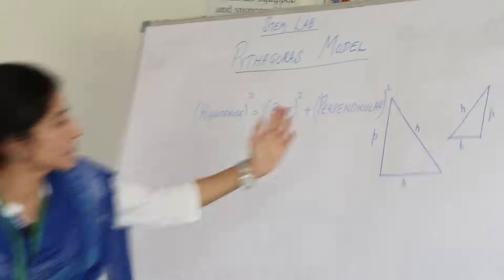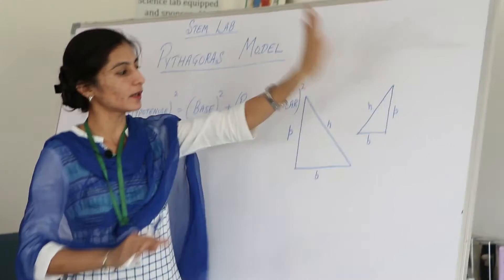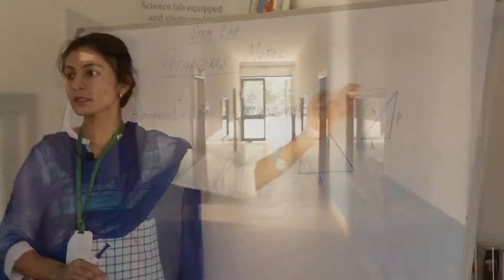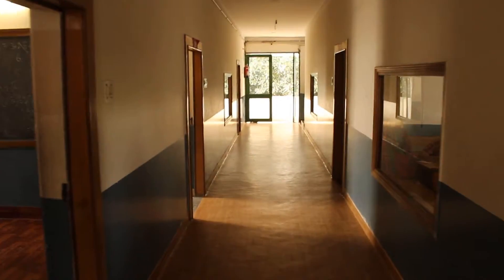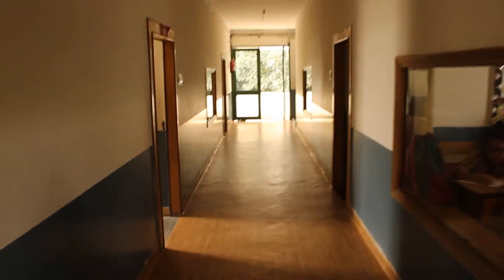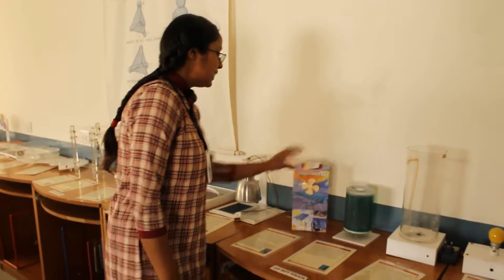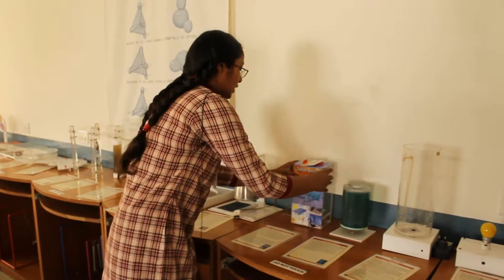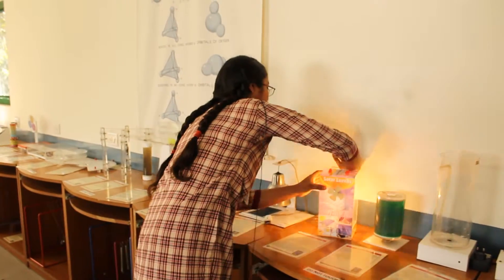Whatever we teach in class, we give students the theoretical portion, and when they go into the lab they are able to perform experiments or see the models. Because of those models, people are able to apply that theory in their daily life when they see certain things.